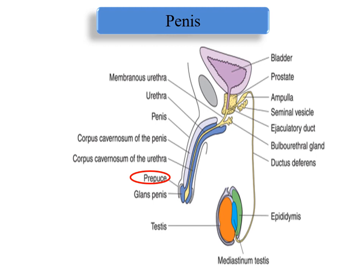At the end of the penis there is a skin fold hanging over the surface called the prepuce. The prepuce is a thin circular fold of skin over the glans penis, and it is removed during circumcision for religious and hygienic reasons. The corpus spongiosum is traversed by the penile urethra, and the end of the penile urethra is called the glans penis, which is covered by the prepuce.